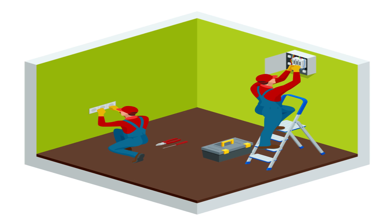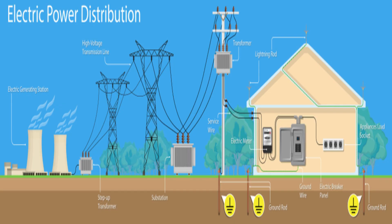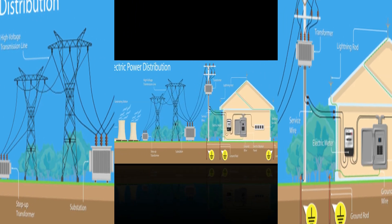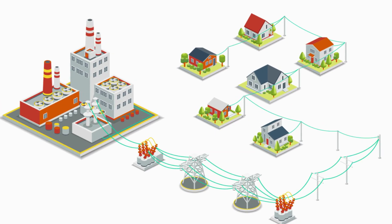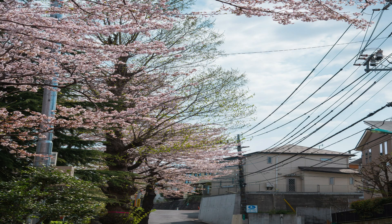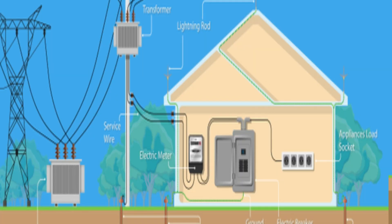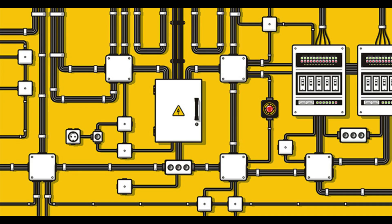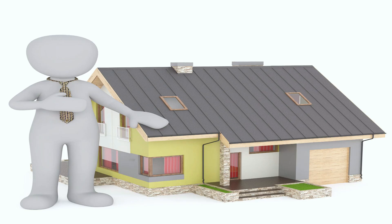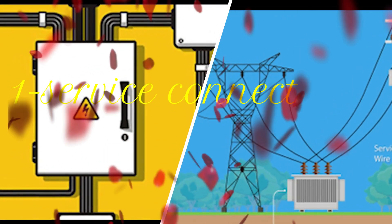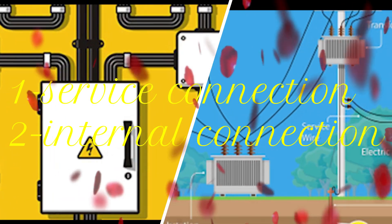It is the duty of the electricity supply agency to provide electricity up to a point outside the consumer premises, but an MEP engineer is concerned with the electrification process from this point, or sometimes from the substation, to the main switchboard. Based on this, building services cabling can be divided into two: the service connection and the internal connection.